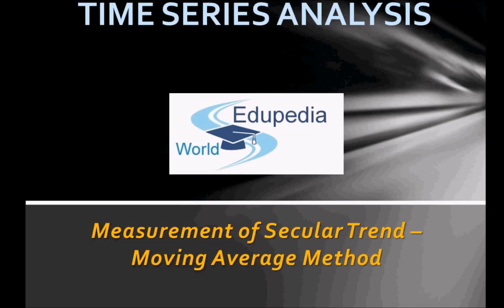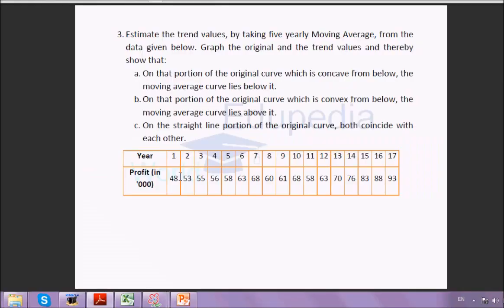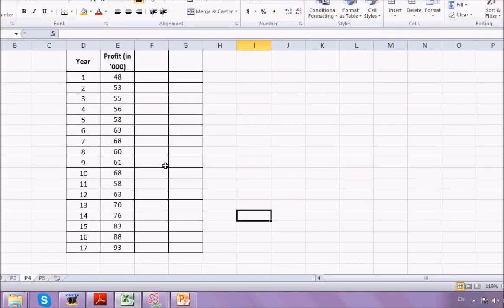This is just to consolidate your understanding. The first question was: estimate the trend value by taking a five-yearly moving average from the data given below. Graph the original and the trend values, and thereby show that wherever the original curve is concave from below, the moving average value lies below it; when it is convex from below, the moving average value lies above it; and when it is straight, both of them coincide. We have data for 17 years.